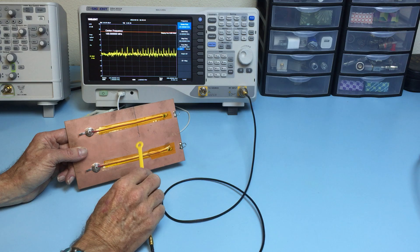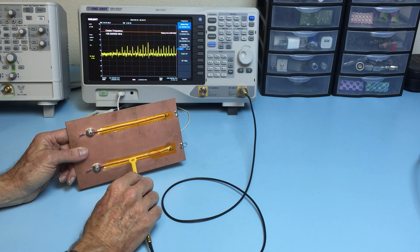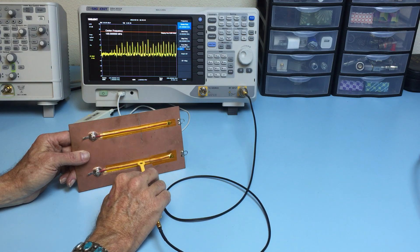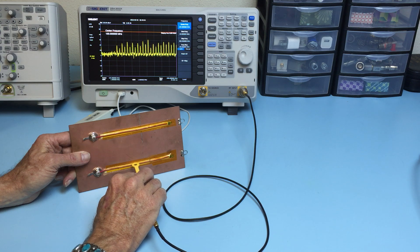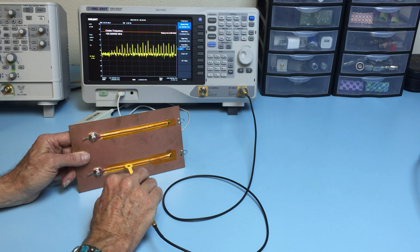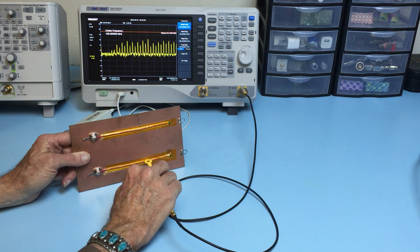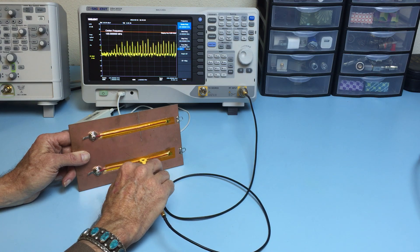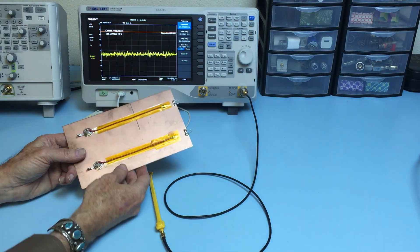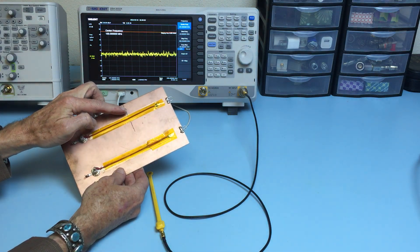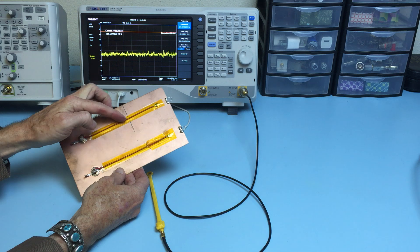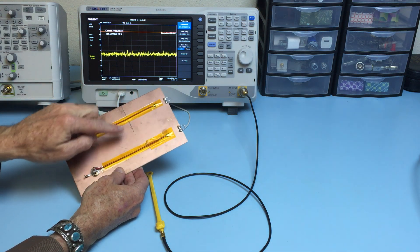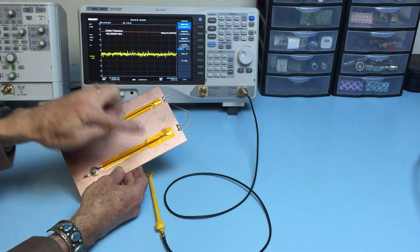But here's an interesting thing. What happens when we probe the un-gapped trace that's not even connected? Notice how much harmonic energy is on that trace. Now the reason for that, this gap forces the magnetic flux lines around this trace to encircle the entire circuit board.